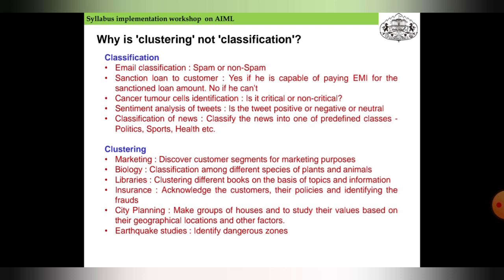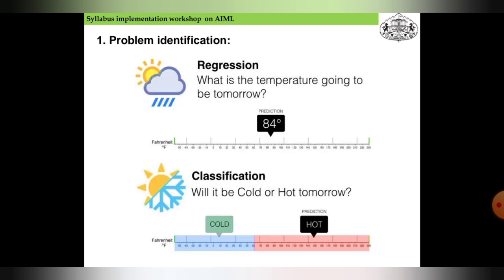Examples of clustering: marketing to discover customer segments for targeting purposes, biology for classification of different species of plants and animals, libraries clustering different books on the basis of topic and information, insurance sectors clustering customers and policies or identifying frauds, city planning and earthquake studies.